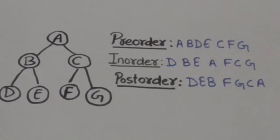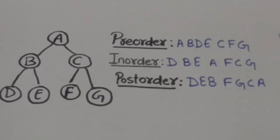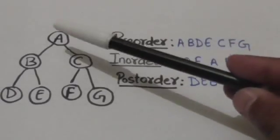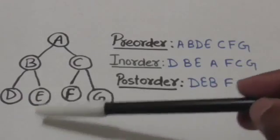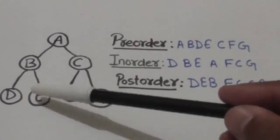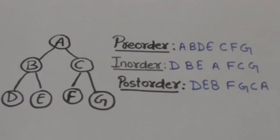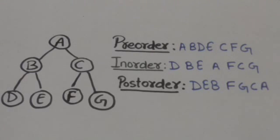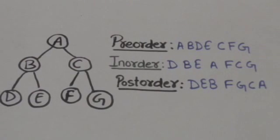Now the left subtree of root A is traversed in pre-order. B is the root of the left subtree of root A, so B will be processed. Then the left subtree of node B will be traversed in pre-order. Left subtree of node B has only one node, that is D, so D will be processed. After this, the right subtree of node B will be traversed in pre-order. Right subtree of node B has only one node, that is node E, so node E will be processed.